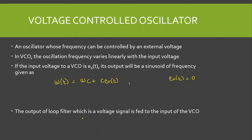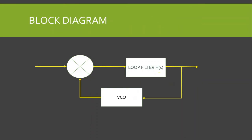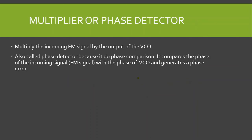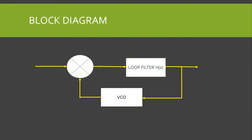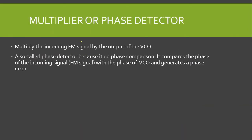The output of the loop filter, which is a voltage signal, is fed to the input of the VCO. The multiplier circuit multiplies the incoming FM signal by the output of the VCO. You can see in the block diagram that the FM signal is multiplied by the VCO output — that is the job of the multiplier circuit.